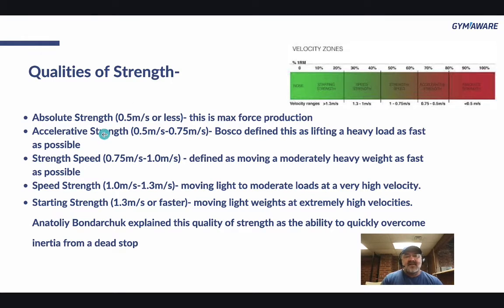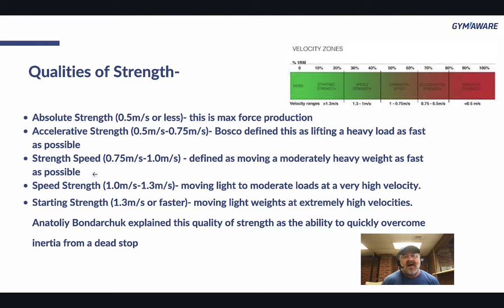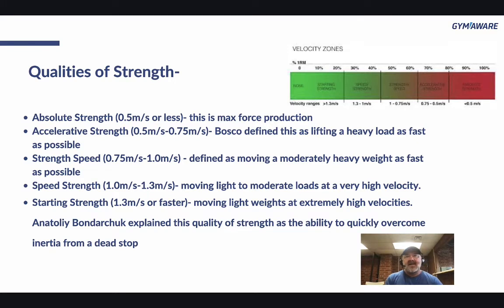Accelerative strength — Bosco defined that as lifting a heavy load as fast as possible. Whatever the load is, moving it as fast as possible is important. Speed strength is defined as moving a moderately heavy weight as fast as possible. Then there's starting strength — that's going to be faster than 1.3 meters per second, basically moving light weights at extremely high velocities. Bondarchuk explained this quality as the ability to quickly overcome inertia from a dead stop.